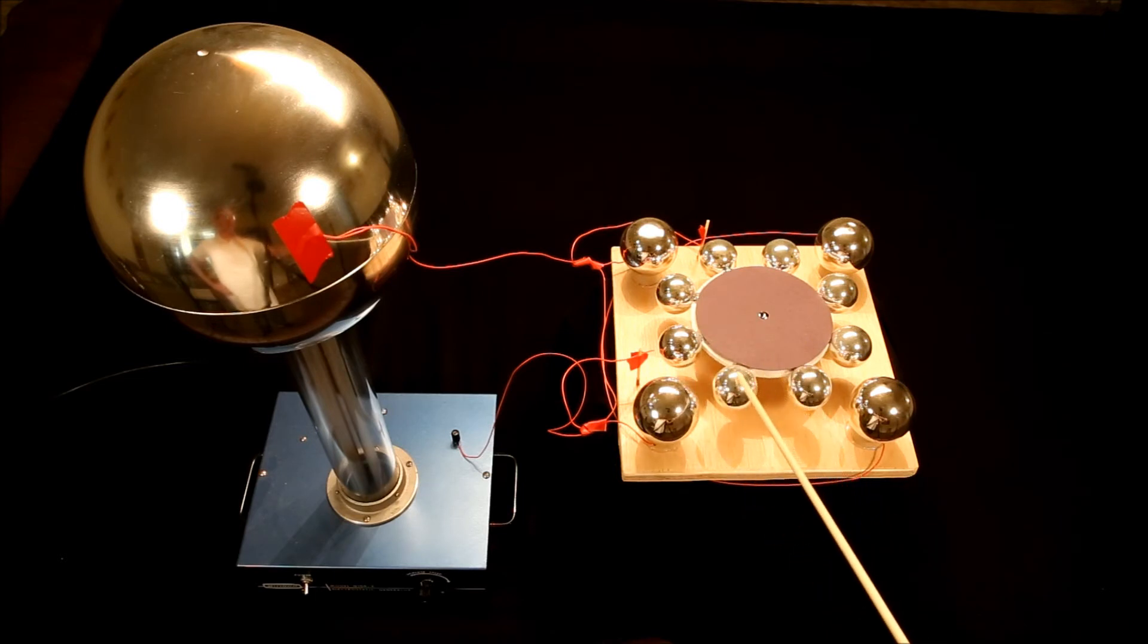The charge on this side will be positive, swings past, this wire gives it a negative charge, so the armature keeps going. And here's how it works.